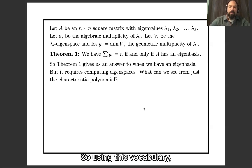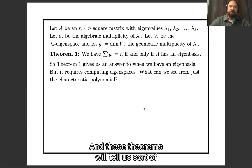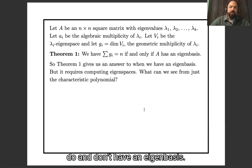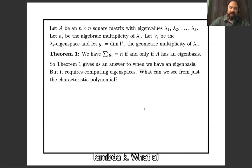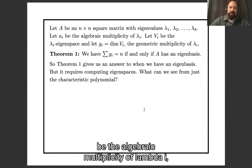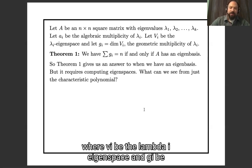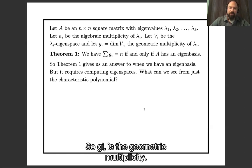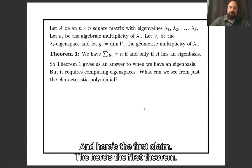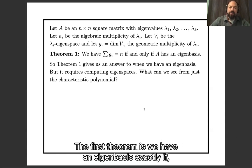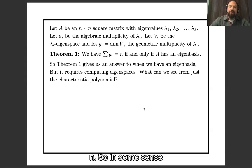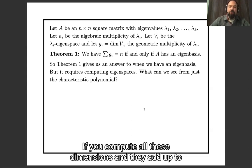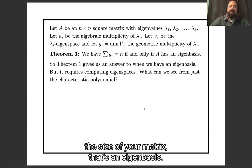Using this vocabulary, we're going to prove a bunch of theorems that tell us what can happen with these concepts, and in particular when we do and don't have an eigenbasis. Let A be an n by n matrix with eigenvalues λ₁, λ₂, …, λ_k. Let a_i be the algebraic multiplicity and g_i the geometric multiplicity of λ_i. Theorem one: we have an eigenbasis exactly when the g_i's sum to n.